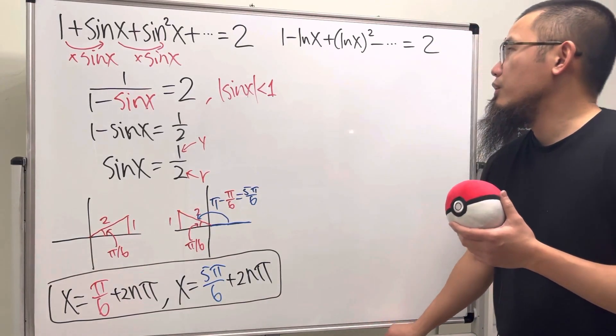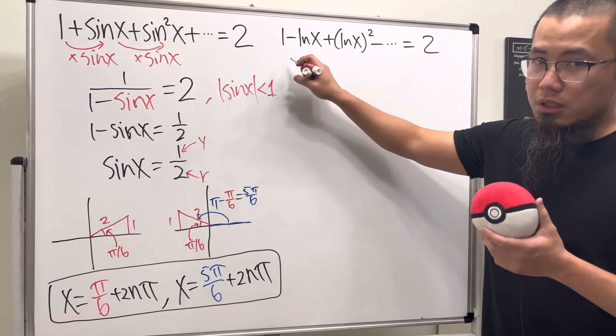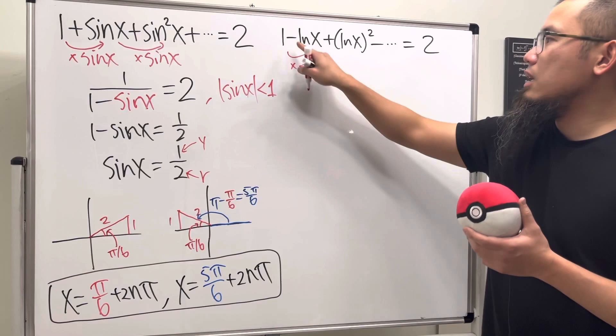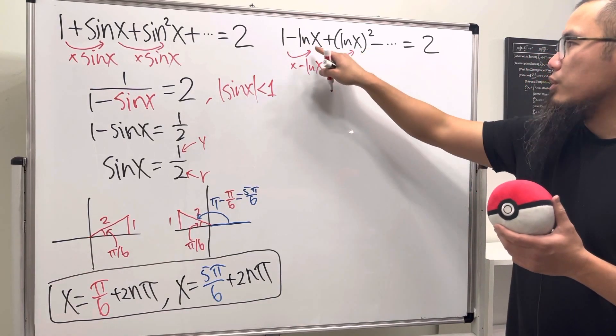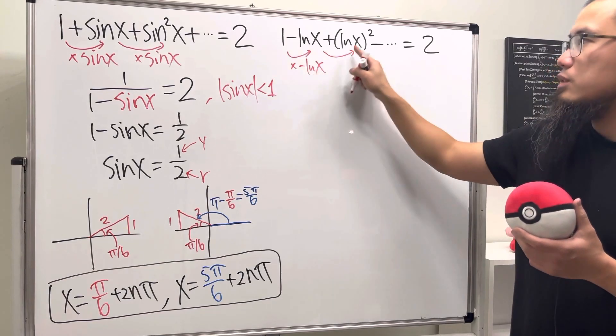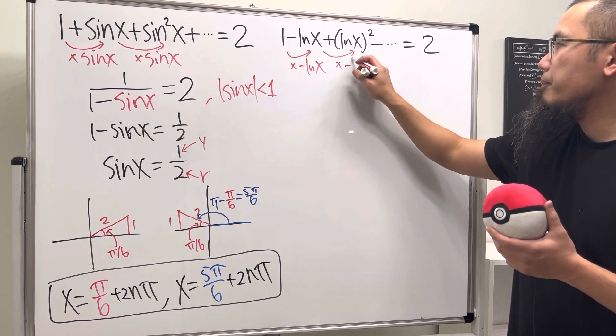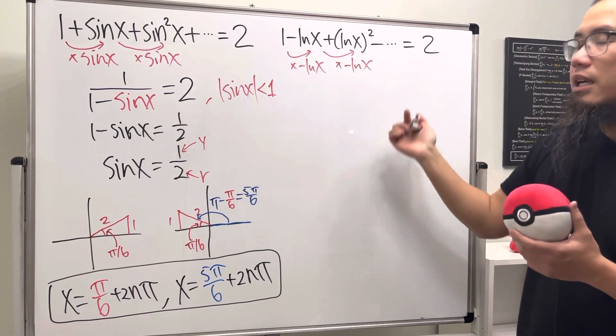Okay, now for the second one, similar style, but this time the common ratio is negative ln x. From here to here we multiply by negative ln x, and then we do it again, so negative ln x times negative ln x we get the positive ln x squared. So this time, this is our common ratio, and you see that the next term is negative, so that's correct.